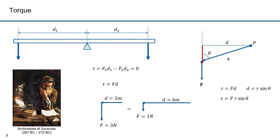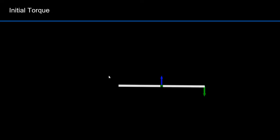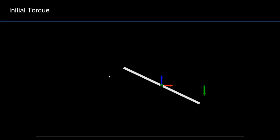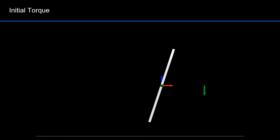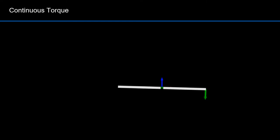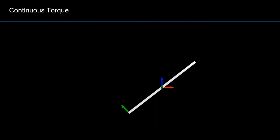Archimedes was the first to talk about the concept of torque — it originated with the study of levers. Here's what torque looks like: if I apply an instantaneous force to a rod, it will rotate at a constant rotation rate, with torque only applied at the beginning. After the torque was applied, the rod rotated freely. Here's a case where there's constant torque — rotation starts and increases over time. If I apply a constant torque, I'm applying a constant force which will increase the rotational velocity.